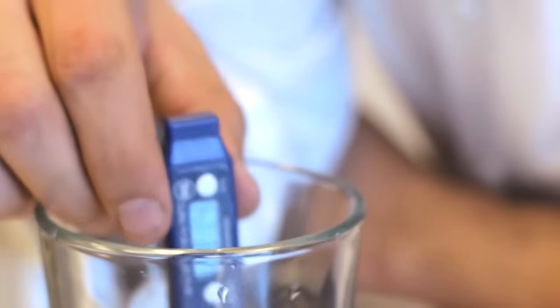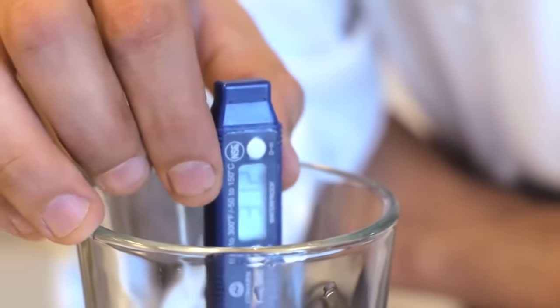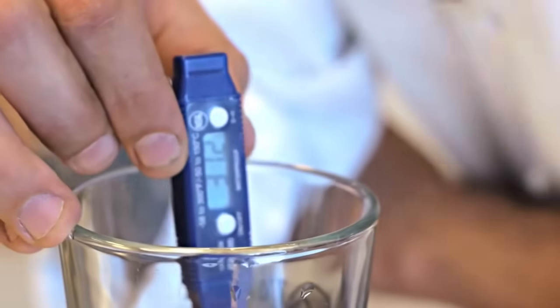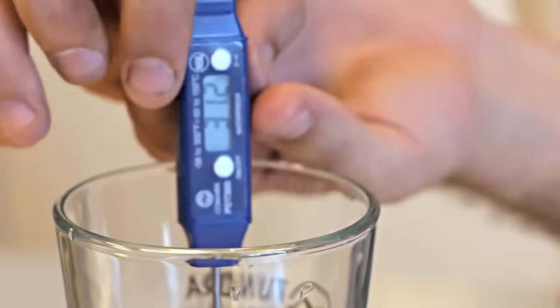So we're going to insert the needle into the water, being sure that it's not in contact with the side walls, the bottom of the cup or glass itself. So here we're reading 31.2 degrees. Now we should know that this should be 32 degrees.